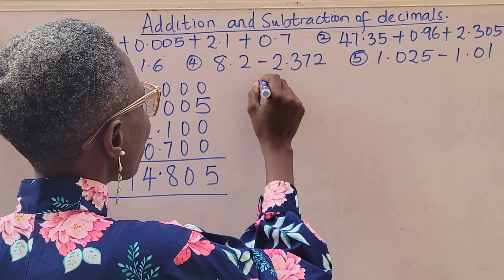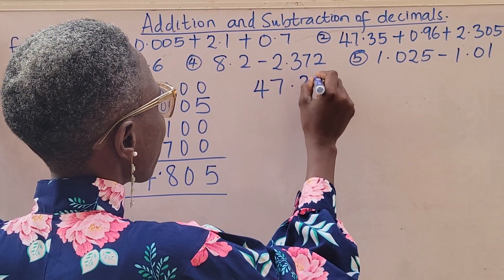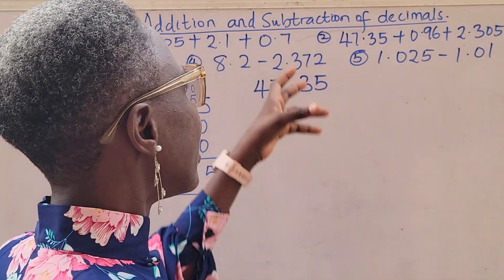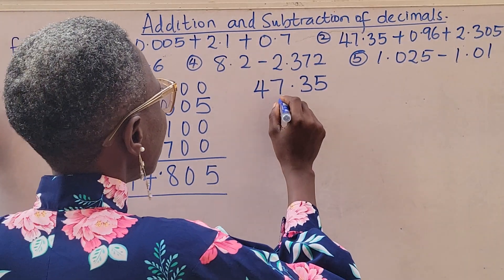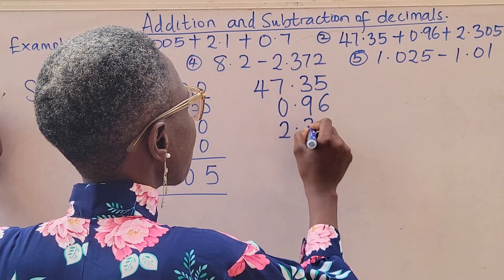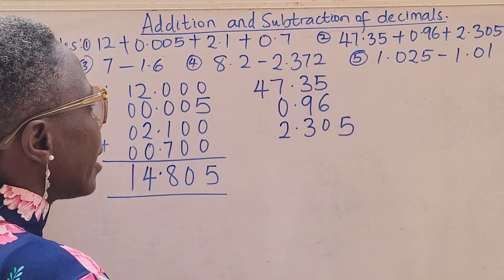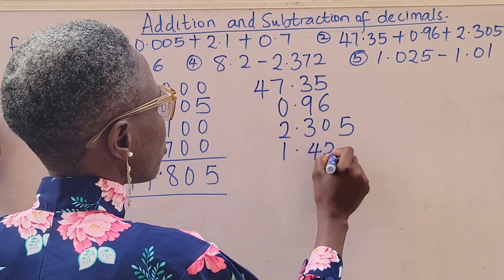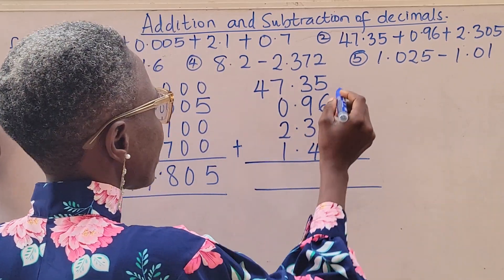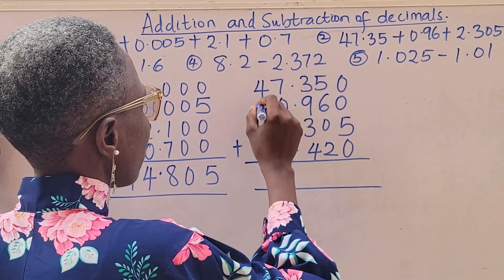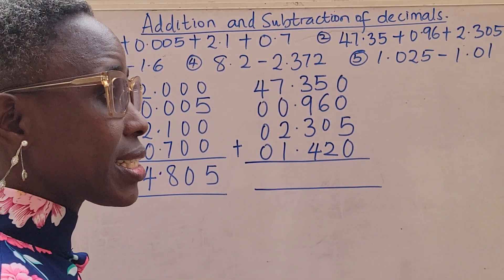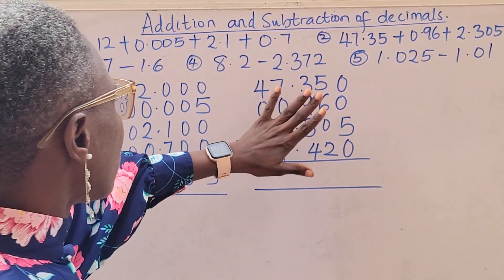Now question 2: we have 47.35 + 0.96 + 47.36 + 2.305 + 1.42. Don't forget — your decimal point is what you must focus on. Ensure they are aligned. Once you have arranged them and your decimals are aligned, fill up the empty spaces with zeros. It makes no difference because zero is still nothing.